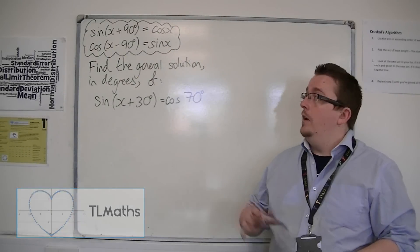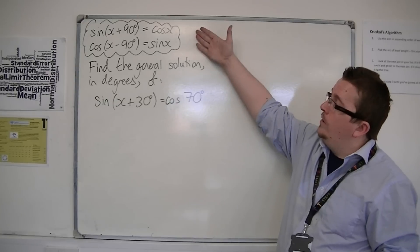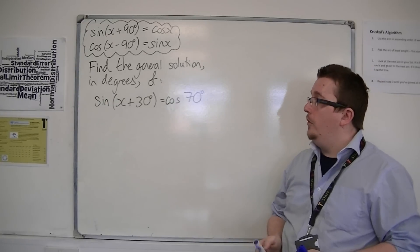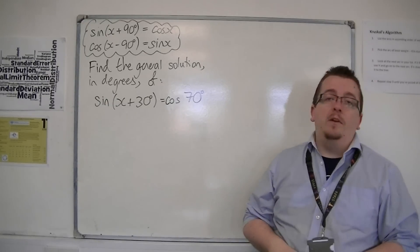Following on from the previous video, I showed you how sine x plus 90 is equal to cos, and cos of x minus 90 must be sine.